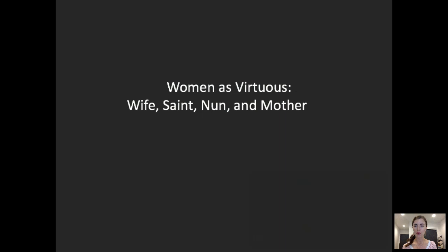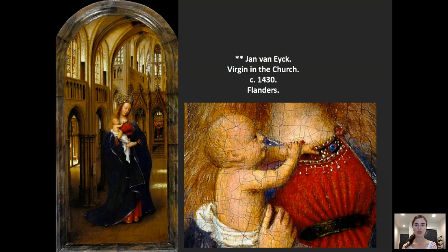Starting off, looking at women as virtuous: wife, saint, nun, and mother. In the last lecture we were looking at a work by Jan van Eyck, the Virgin in the Church, with this ideal of the Virgin Mary as a wonderful mother that all could look up to, a kind of mother to all in the Christian context. We see her really filling up the space of the church, that idea that her body was connected to the church itself. She's within a Gothic style church, very much a church of the style of the time and a few centuries earlier.